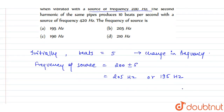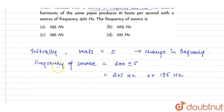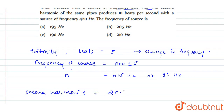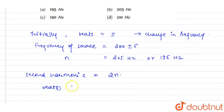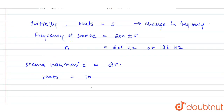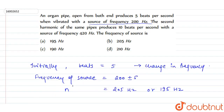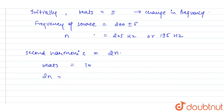The second harmonic of the same pipe produces 10 beats per second. The second harmonic is equal to 2n, and the beats associated with it are 10. So 2n can be equal to its source frequency of 420 Hz plus or minus 10, giving 2n = 420 ± 10.